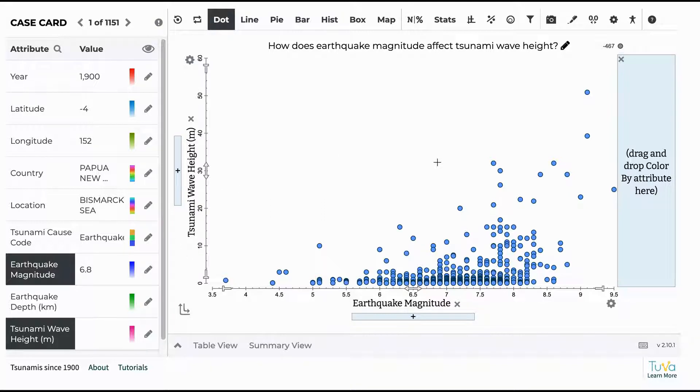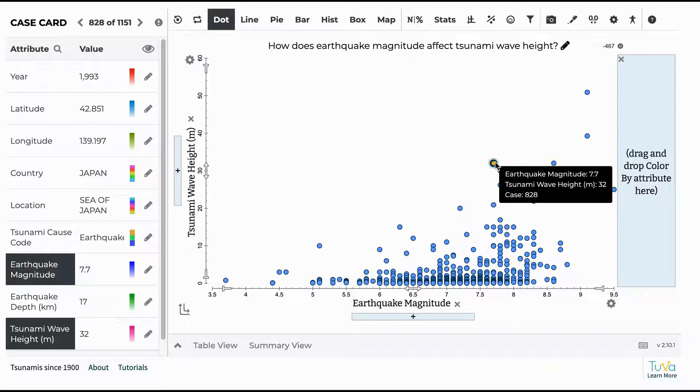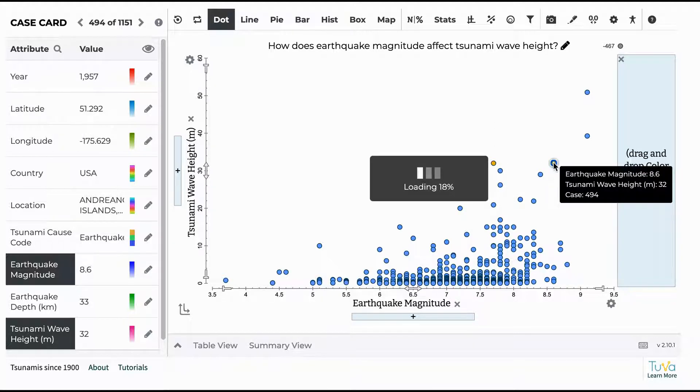So for example, you could select one of these cases up here. And it tells you that the wave height was 32 meters and the earthquake magnitude was 7.7. So the students can click on the cases and get a little bit more information.